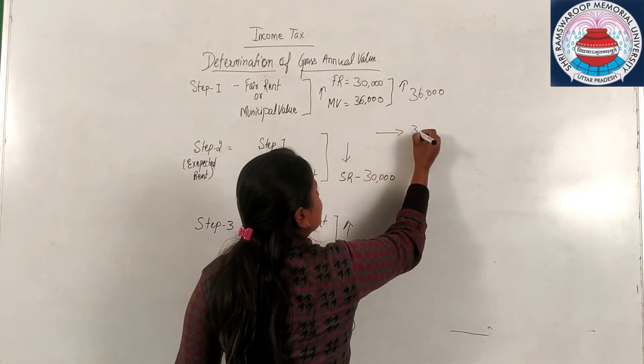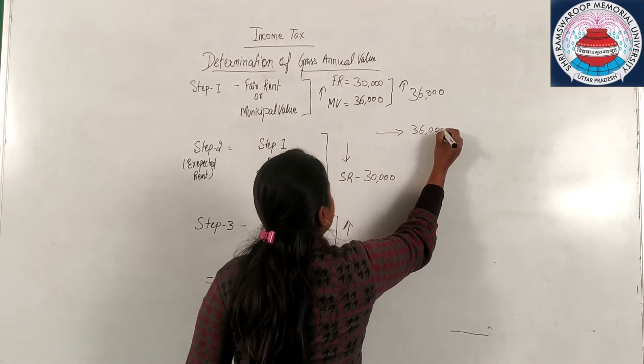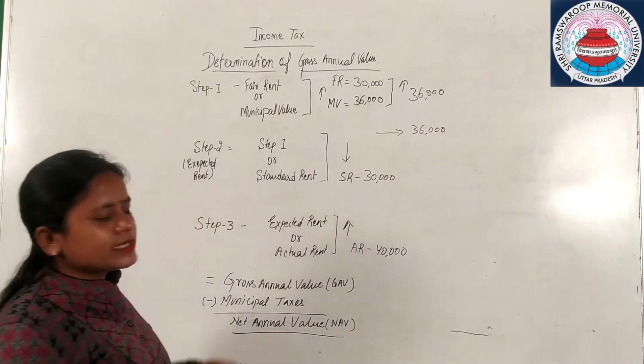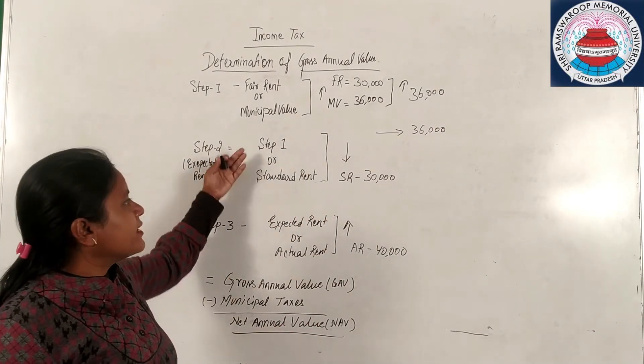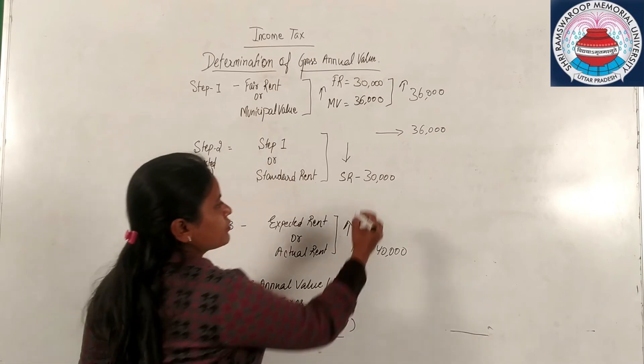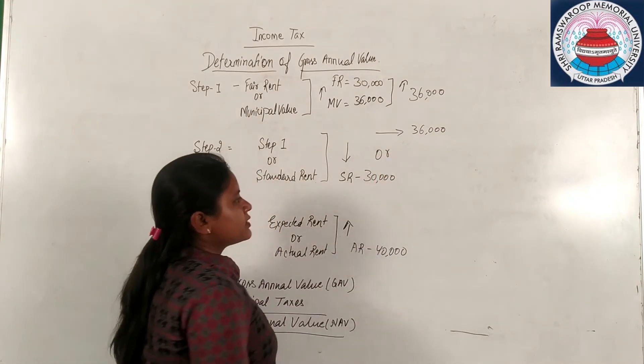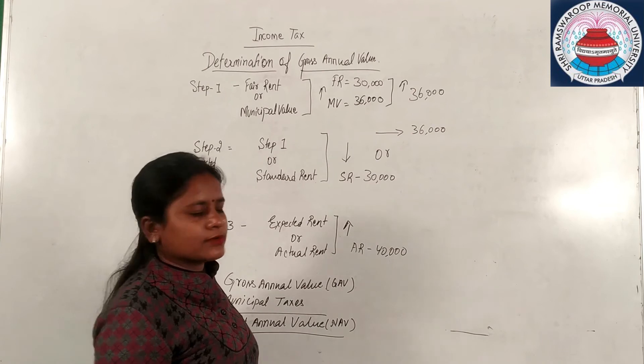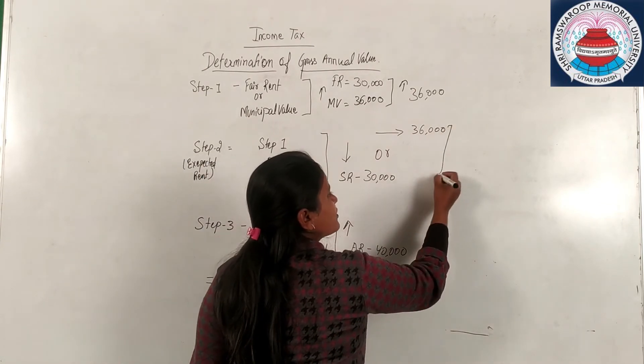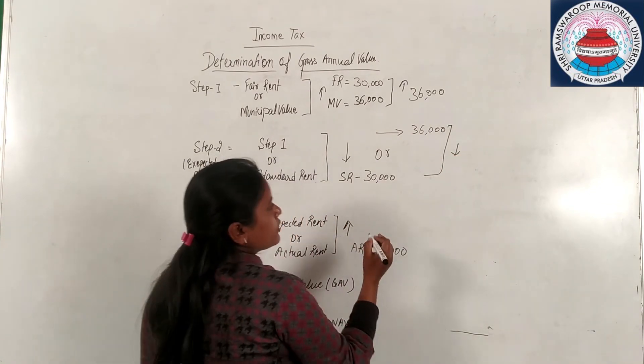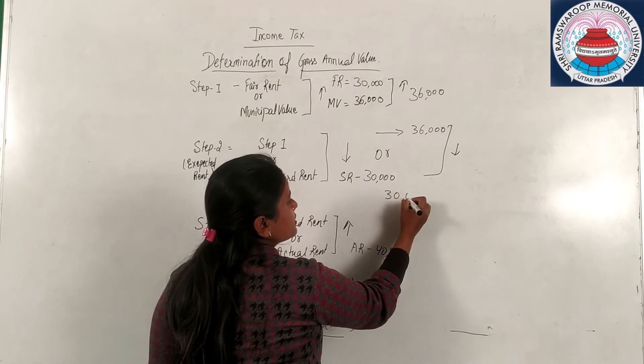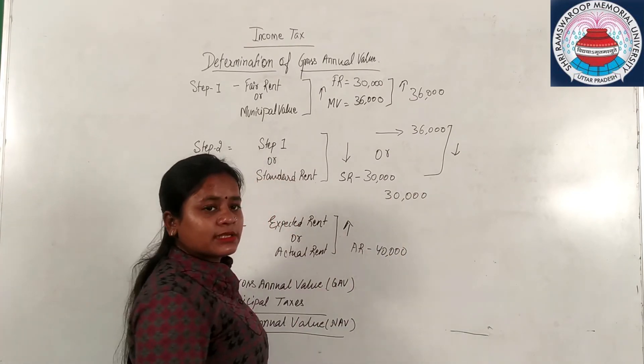We will write here 36,000 and next we will compute in step two standard rent or step one. So 30,000 SR or 36,000. Which one is lower? Lower is 30,000. Step two answer is 30,000.